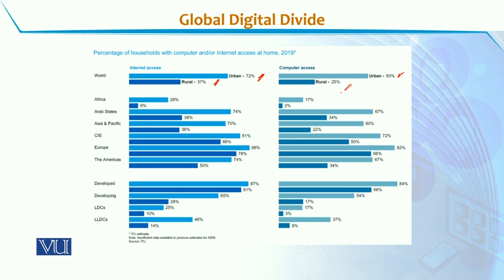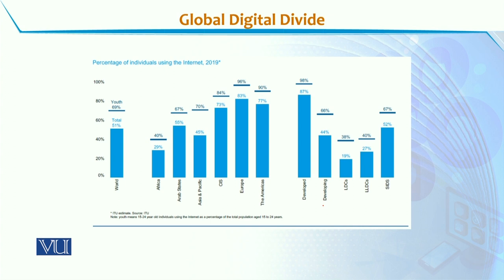Comparing the developed and developing world: in the developed world, 87% have internet access at home and 84% have computer access at home. In the developing world, internet access is 81% and computer access is 66%. But in the least developed countries, internet access is very low at 28% or 25%, and computer access is only 17% as of 2019.